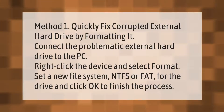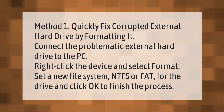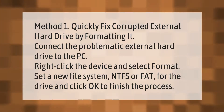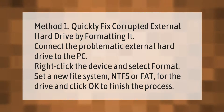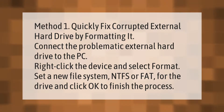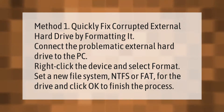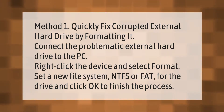Method one: quickly fix a corrupted external hard drive by formatting it. Connect the problematic external hard drive to the PC, right-click the device and select Format, set a new file system — NTFS or FAT — for the drive, and click OK to finish the process.